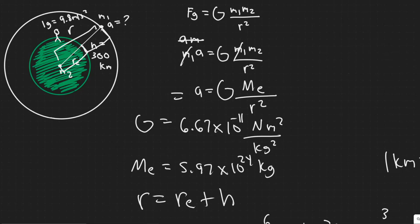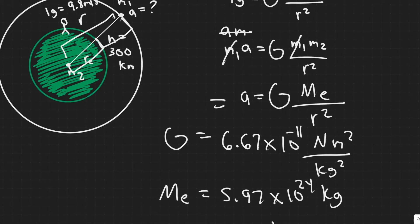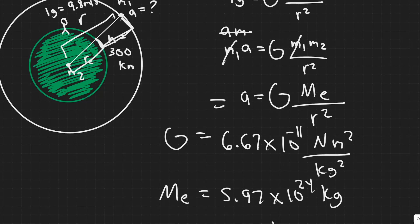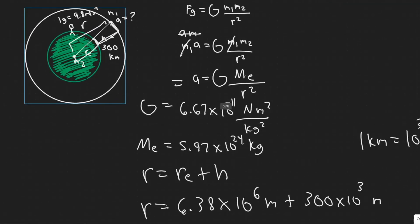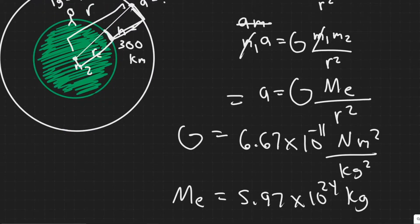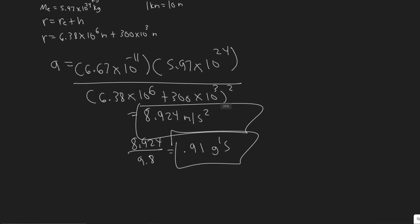Also note that we take r from the center of the Earth, not just the astronaut's height above the surface. If we didn't include the Earth's radius, we'd be way off, because the Earth's radius is much larger than the 300 km height. So make sure you understand that the distance is always measured from the center of the object. With that, these are your answers — hopefully you found this useful.